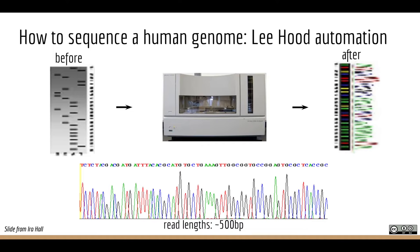The first sequencing dataset I ever worked on was Sanger sequencing data from a few exons of a gene from a few hundred patients. That dataset had taken nearly a year to generate and was super expensive. We were looking for single nucleotide polymorphisms that segregated with phenotypes. Then new technologies popped up and we switched to developing computational tools to leverage these new sequencing technologies to study genetic variation.